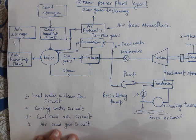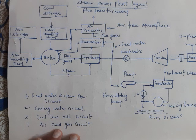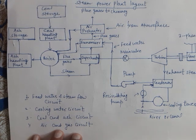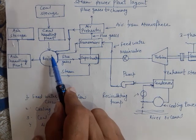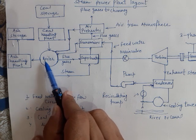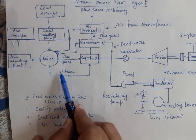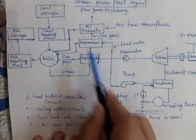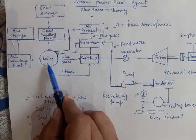In this lecture I am going to discuss a simple layout of a steam power plant with all its important components and parts. Let's begin with the boiler. The boiler is used for the purpose of production of steam. At the exit of the boiler you have dry and saturated steam.